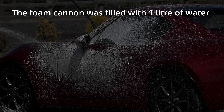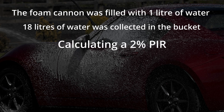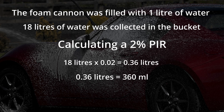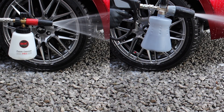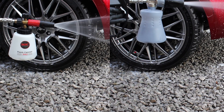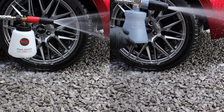When I filled the MTM foam cannon up to that one liter mark, it actually dispensed 18 liters of water — way more than the MJJC, which was only 10.4. So in this example it would be 18 liters × 0.02 to get that two percent panel impact ratio, meaning I'd need to add 360ml of snow foam and top it up to the one liter mark with 640ml of water.